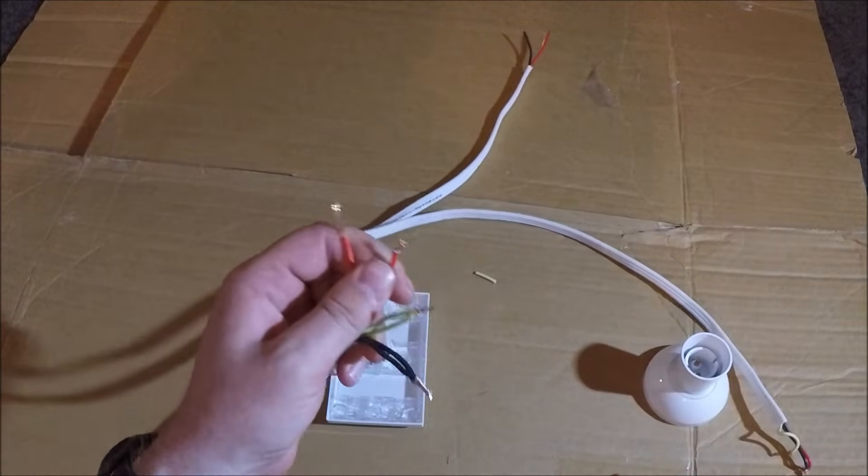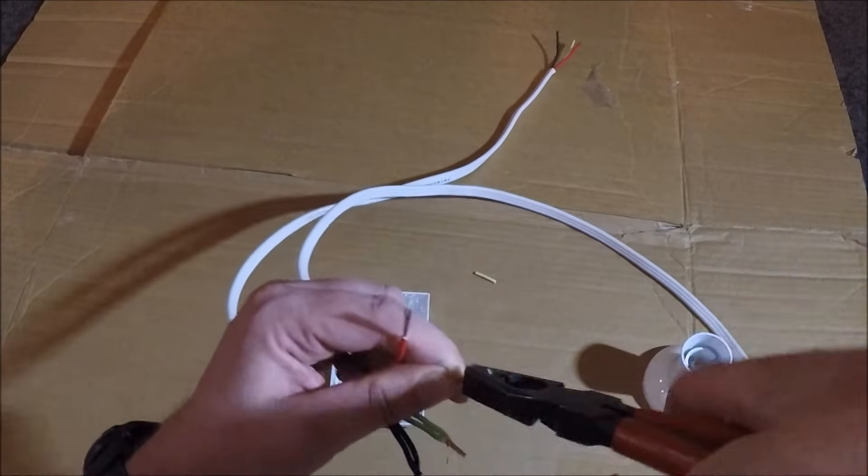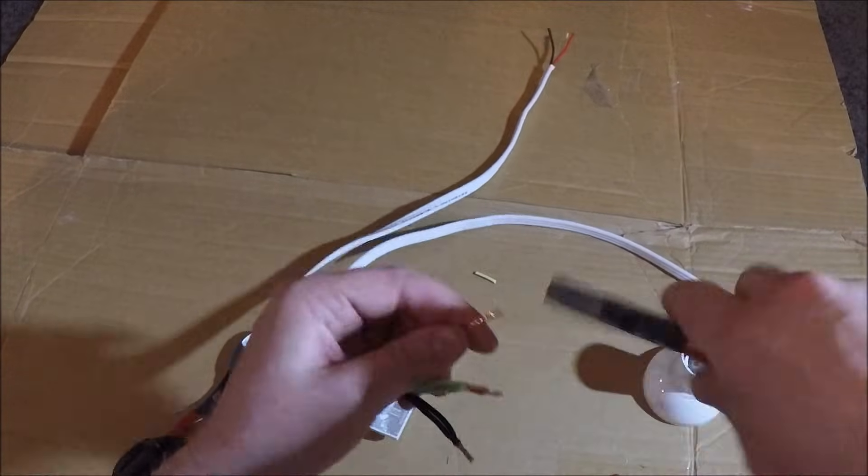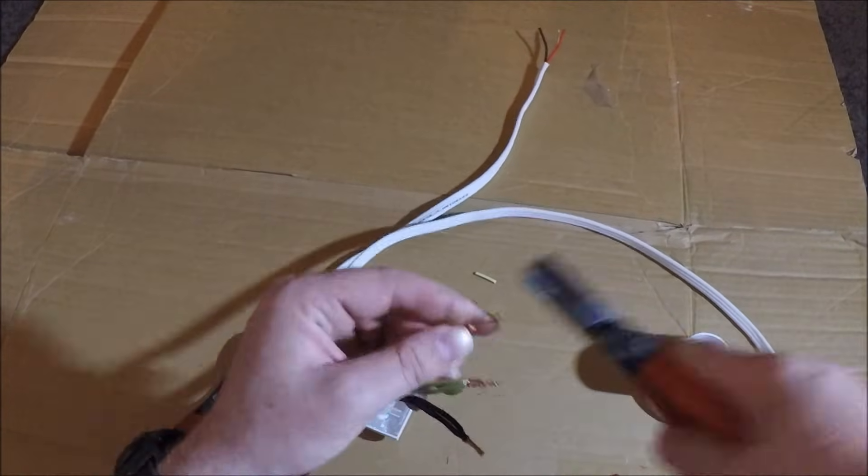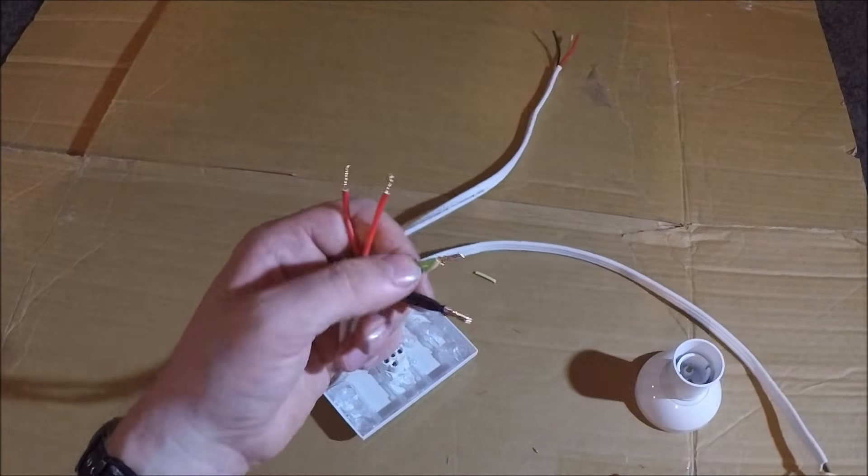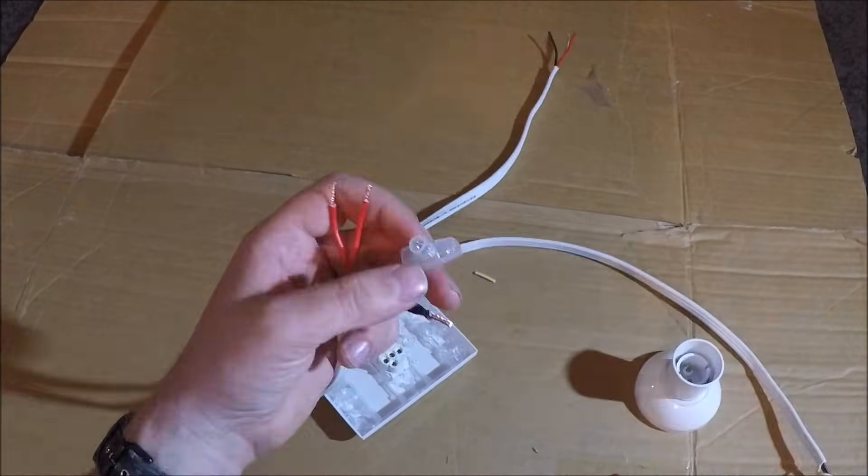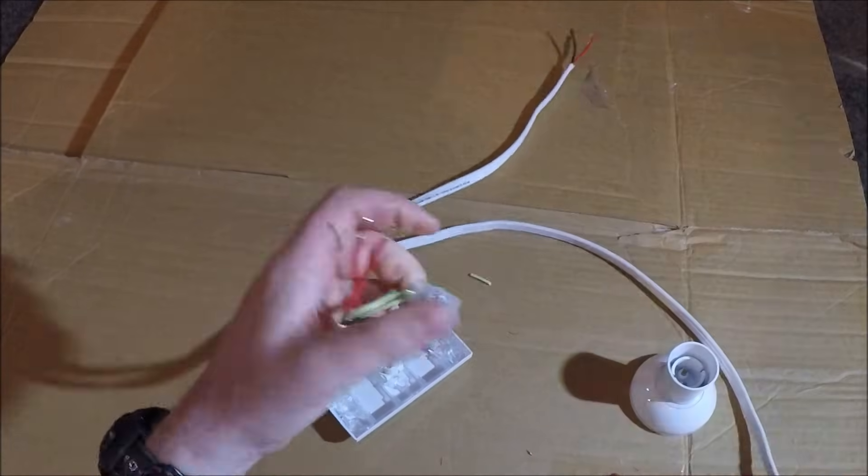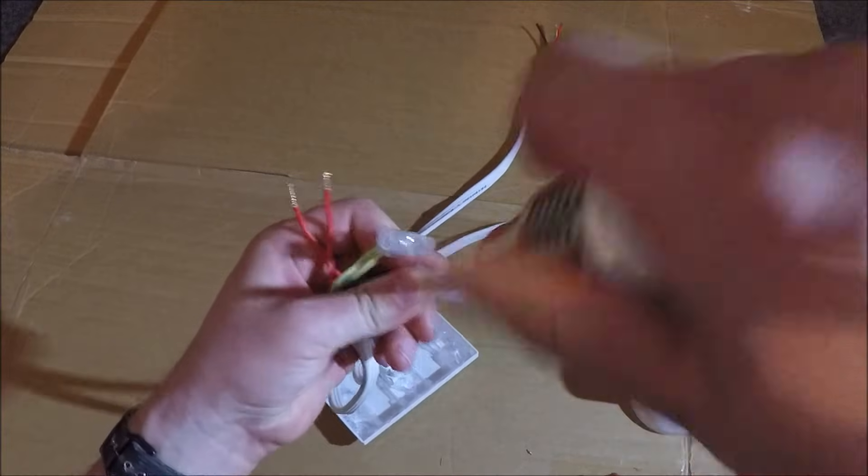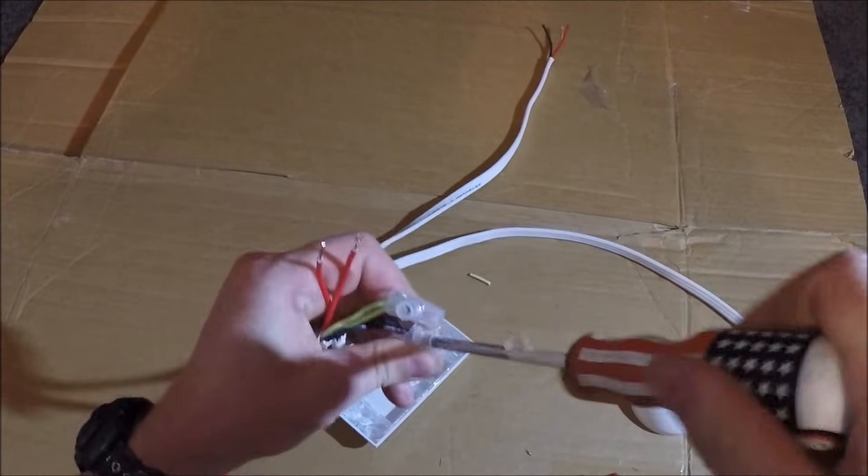Now the two red ones we won't twist together but we'll twist them up. Okay next thing we'll put a connector over each one of these two just so they can't touch each other. So just like that.